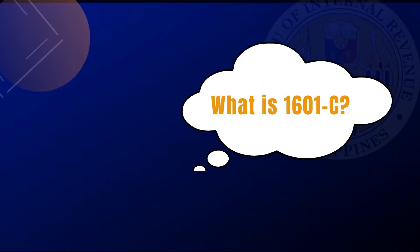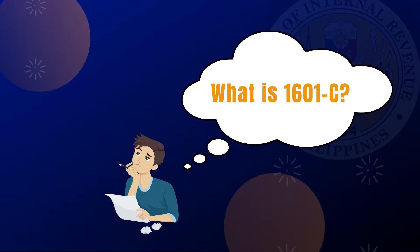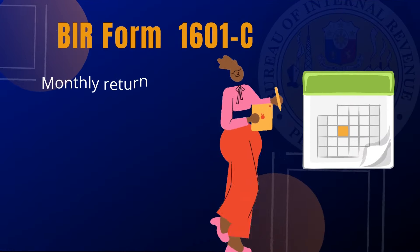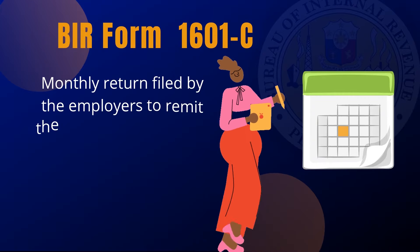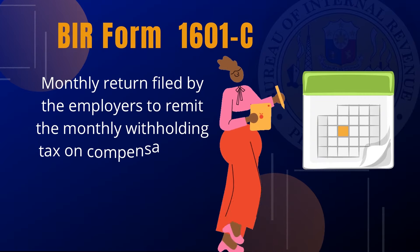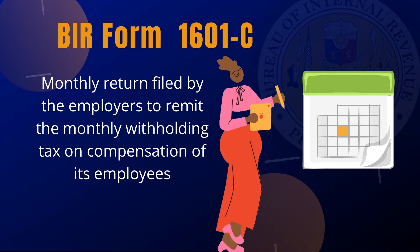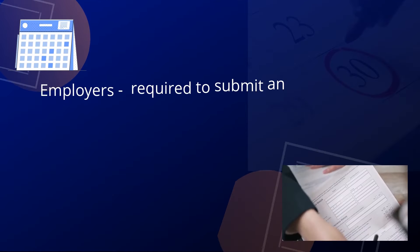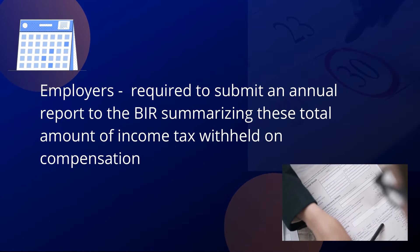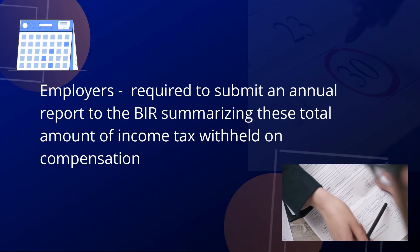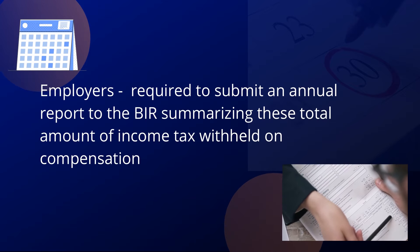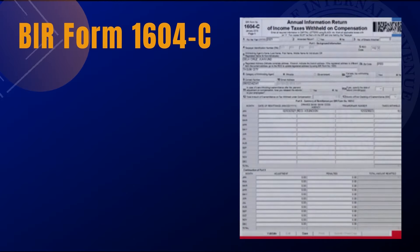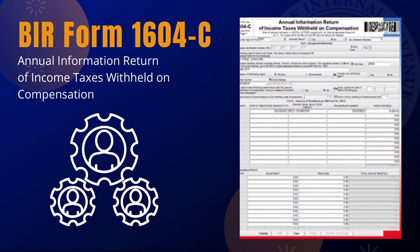Let's review first what 1601C is. 1601C is the monthly return filed by employers to remit the monthly withholding tax on compensation of its employees. At the end of each year, employees are then required to submit an annual report to the BIR summarizing the total amounts of income tax withheld on compensation. This annual information return is filed using BIR Form 1604C.